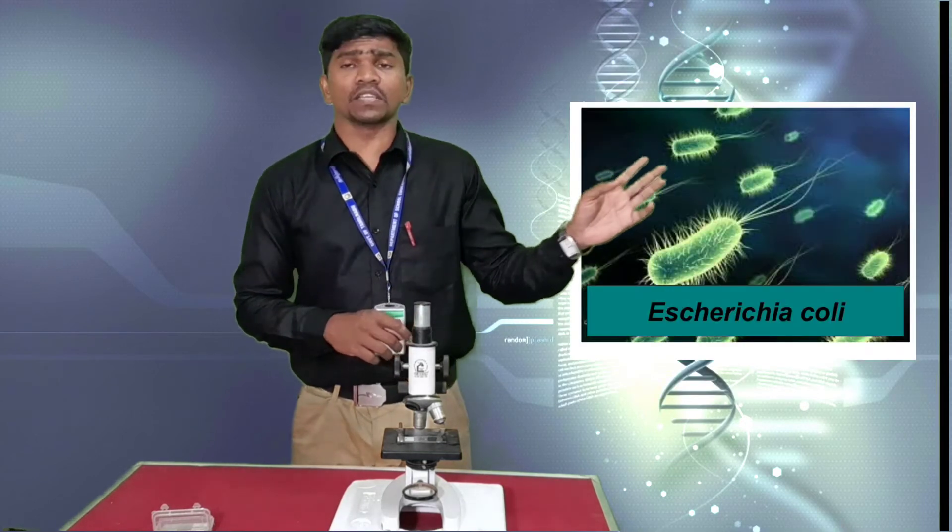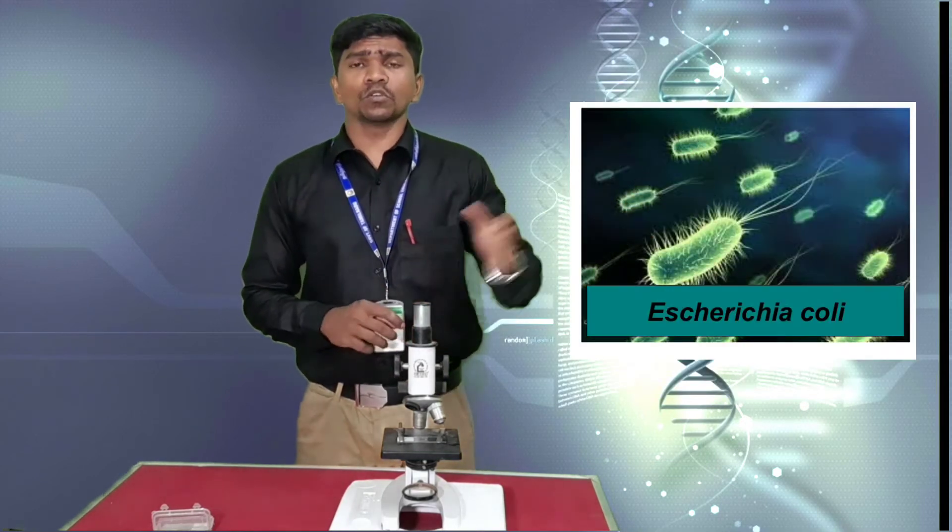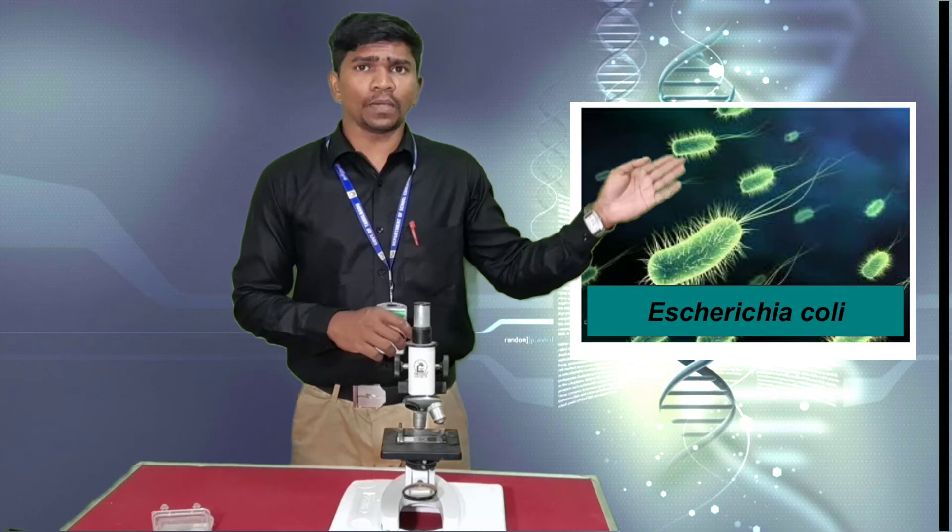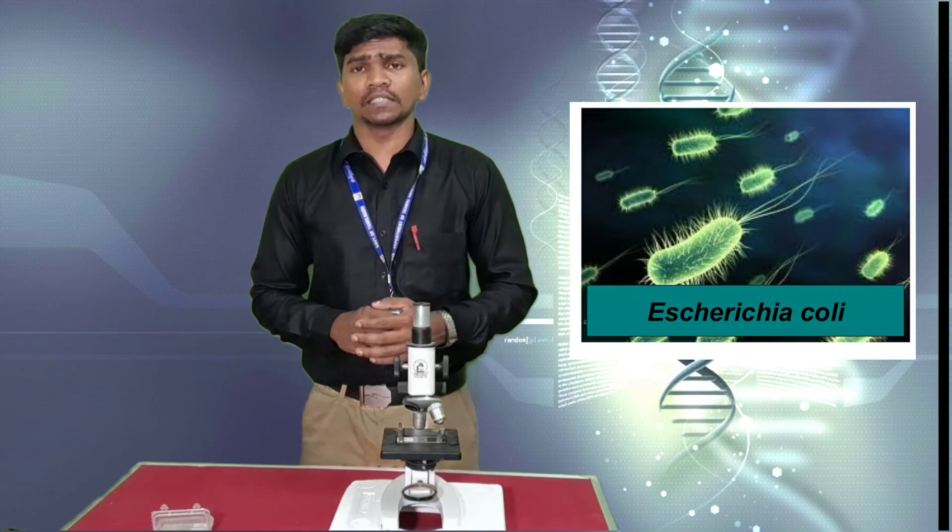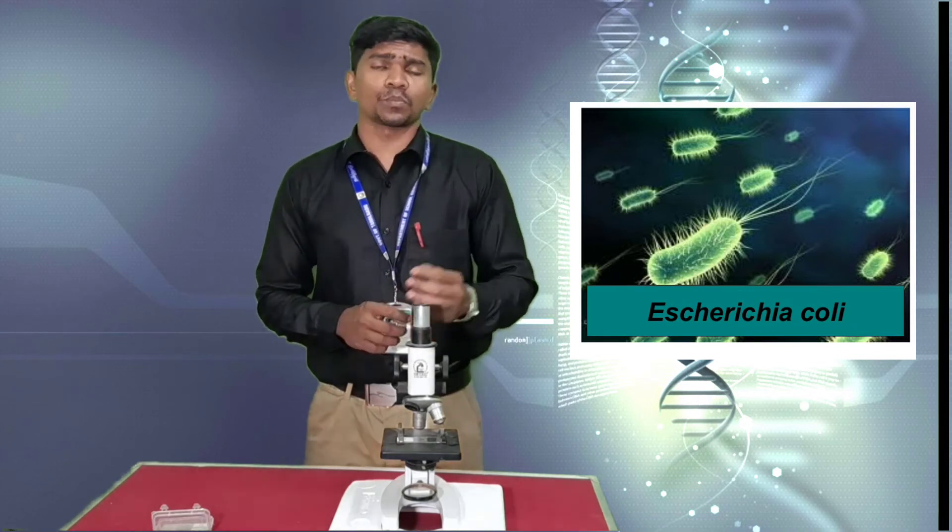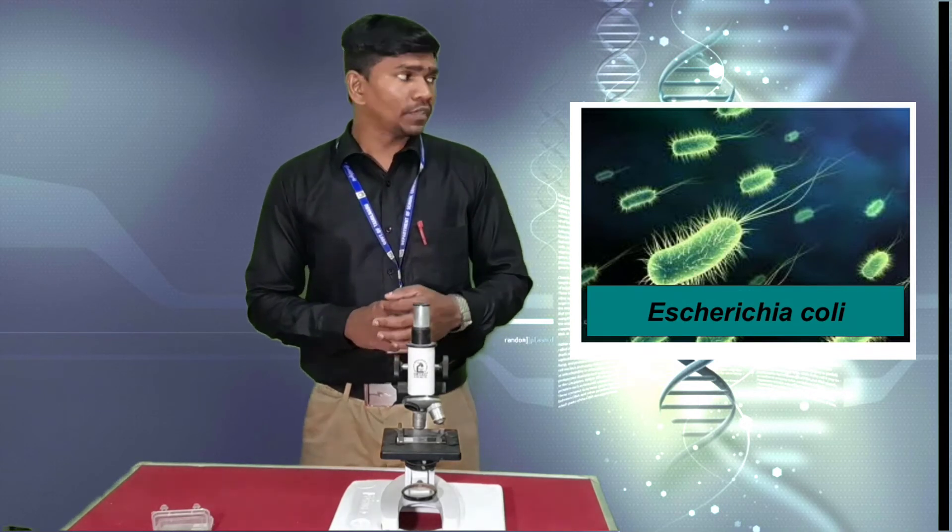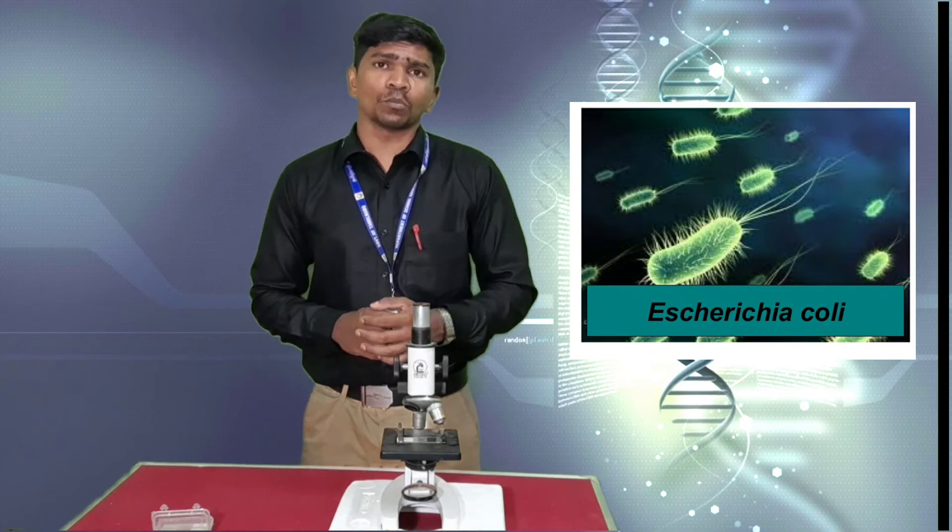Then identification - identify as Escherichia coli. Then you have to write the structure - it is having rod shape and it is having flagella. E. coli plays a vital role in genetic engineering which is producing human insulin with the help of small extra-chromosomal DNA, which is called plasmid.